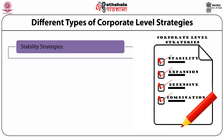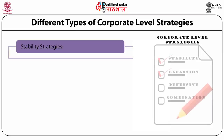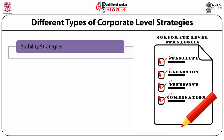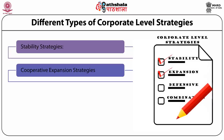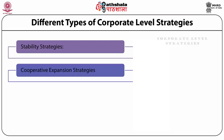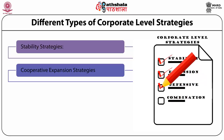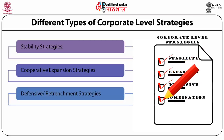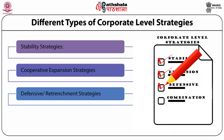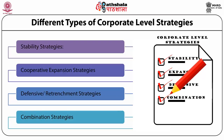There are different types of corporate level strategies. Stability strategies may be of three types: no-change strategies, pause or proceed-with-caution strategies, and profit strategies. Cooperative expansion strategies include integration, diversification, cooperation, and internationalization. The third type is defensive or retrenchment strategy, which may include turnaround, divestment, or liquidation. The last type is combination strategies, which may be simultaneous, sequential, or a combination of both.